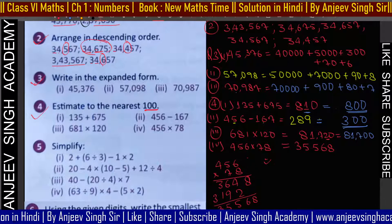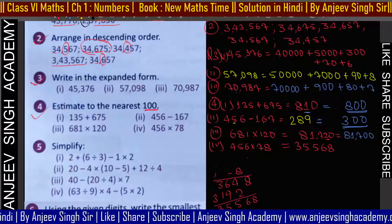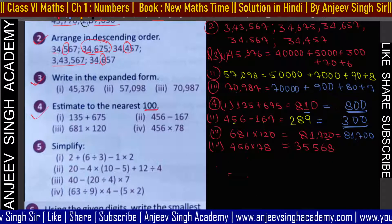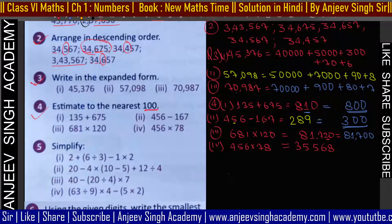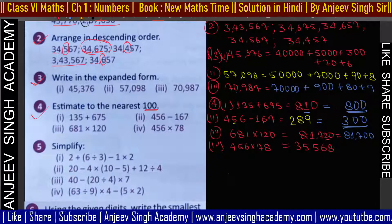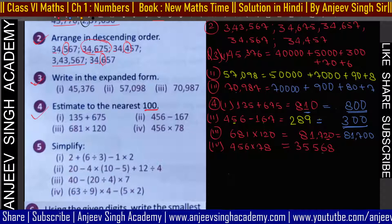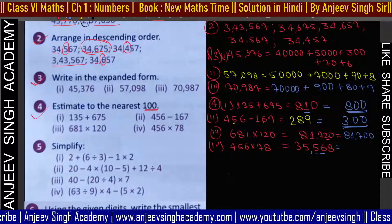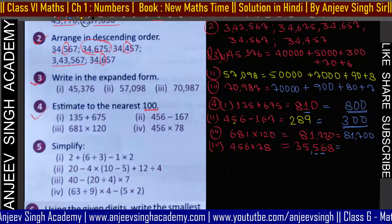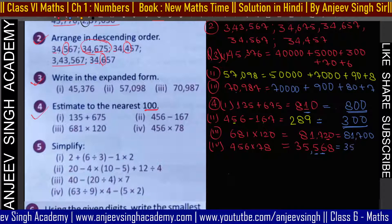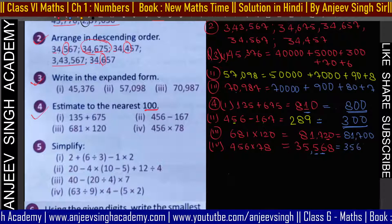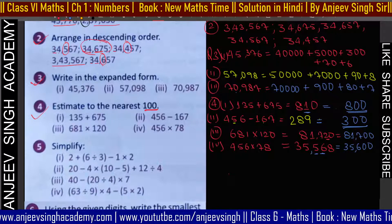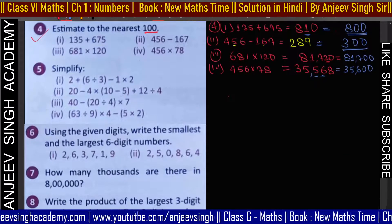Multiply कर लिया — 35,568 निकल आया। अब इसको 100 पर round off करना है। 100 पर round off के लिए 6 देखो — 6 greater than 5 है तो 5 को increase करेगा। यह 35,600 हो जाएगा — बाकी 00। तो यह आपका answer हो जाएगा।